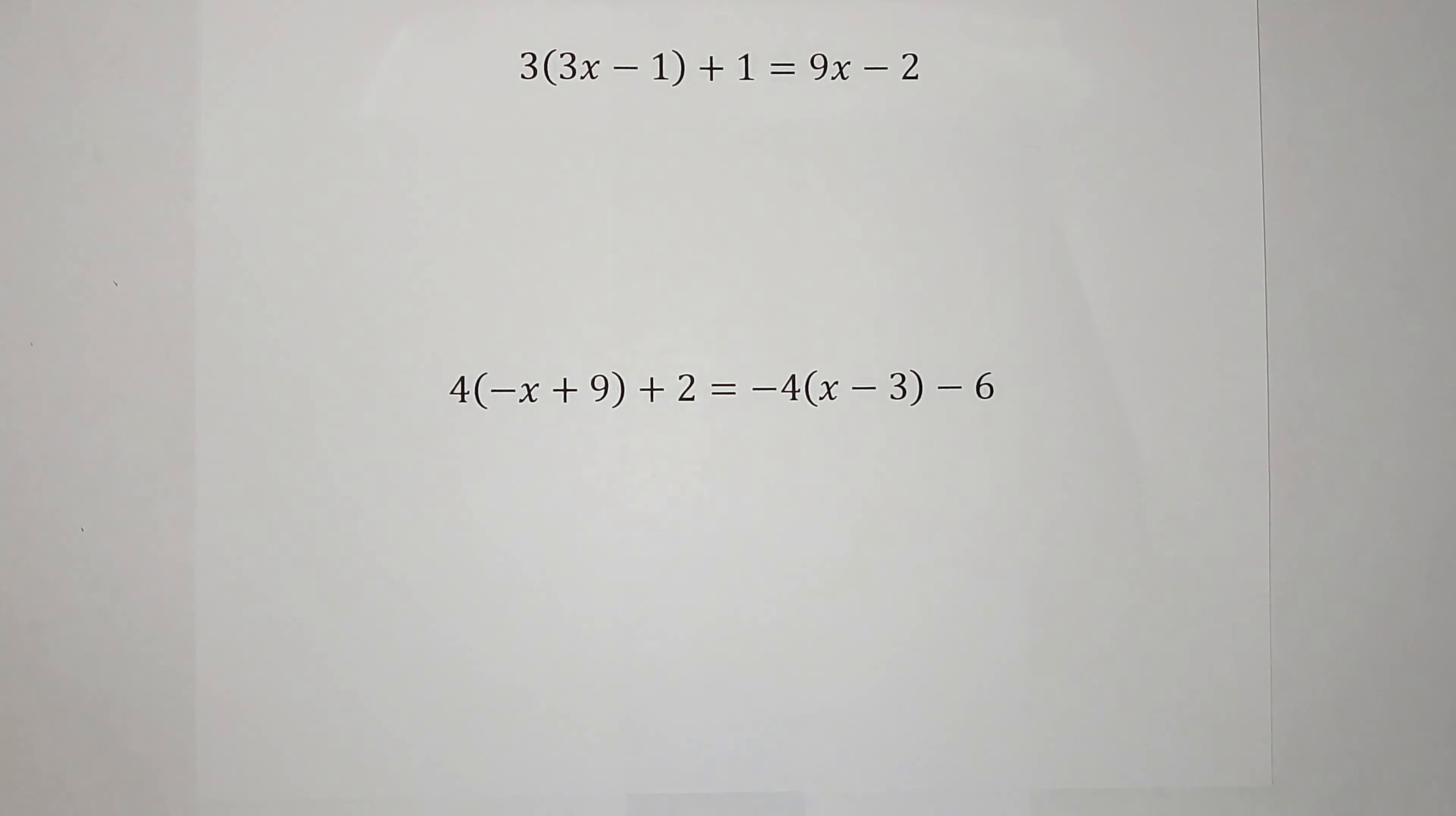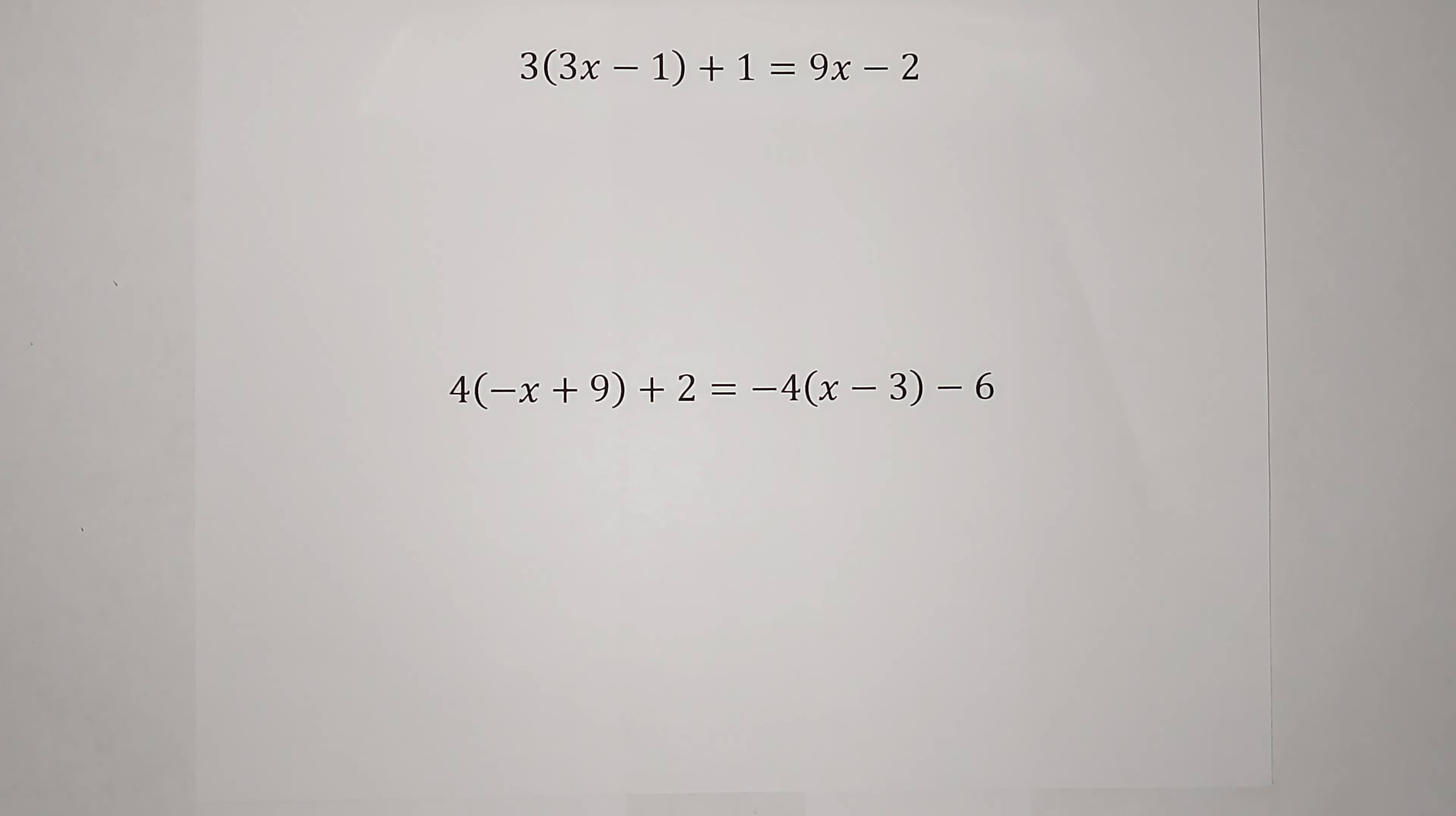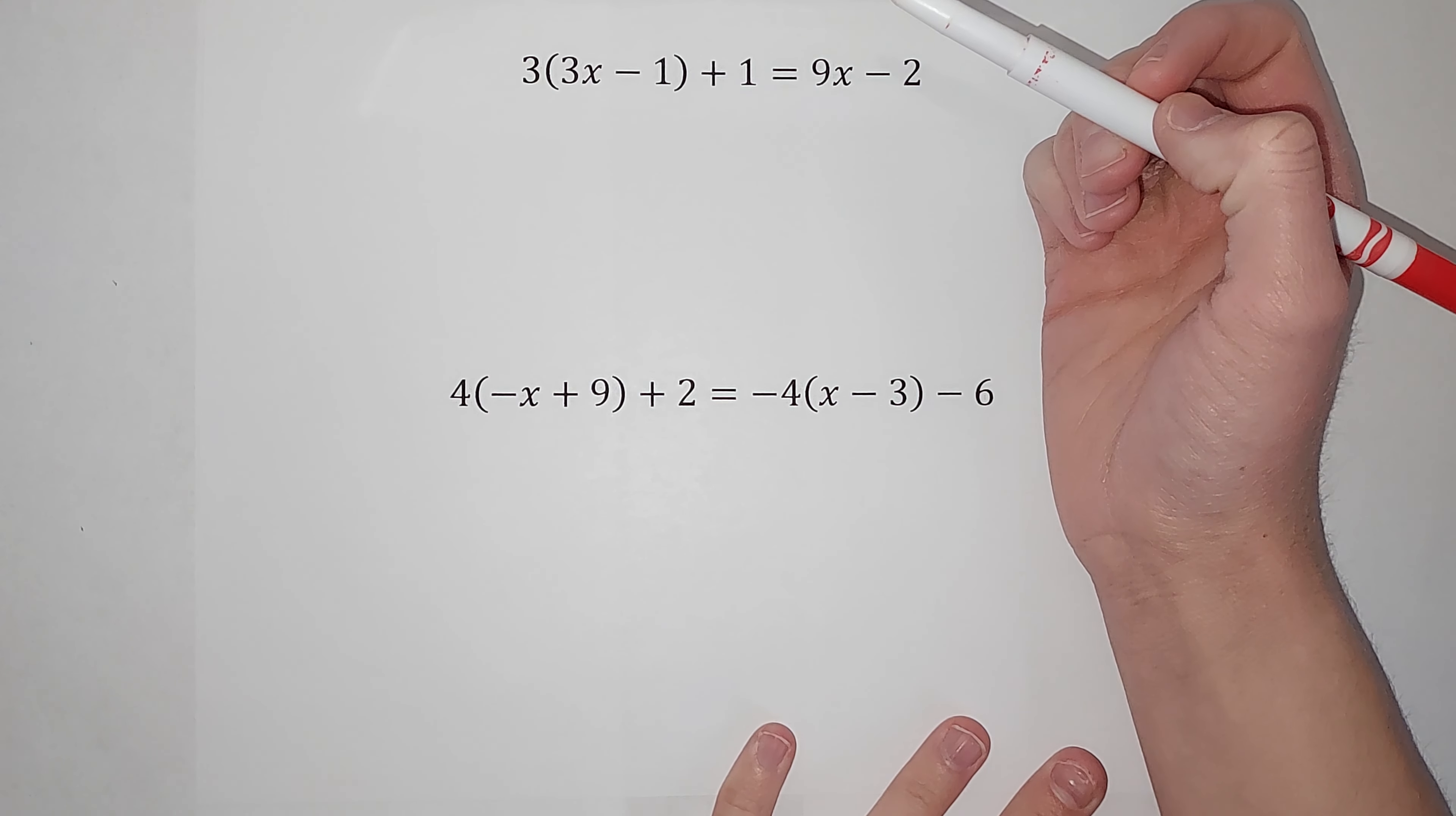Now, you're probably used to seeing one solution. That's when it's just x equals something. So I'm not showing you an example of one of those because you've probably been doing them. So one of these is going to be infinite solutions. One of them is going to be no solutions. And I think you'll figure out the difference pretty quickly. So we are just trying to solve for x here, right?